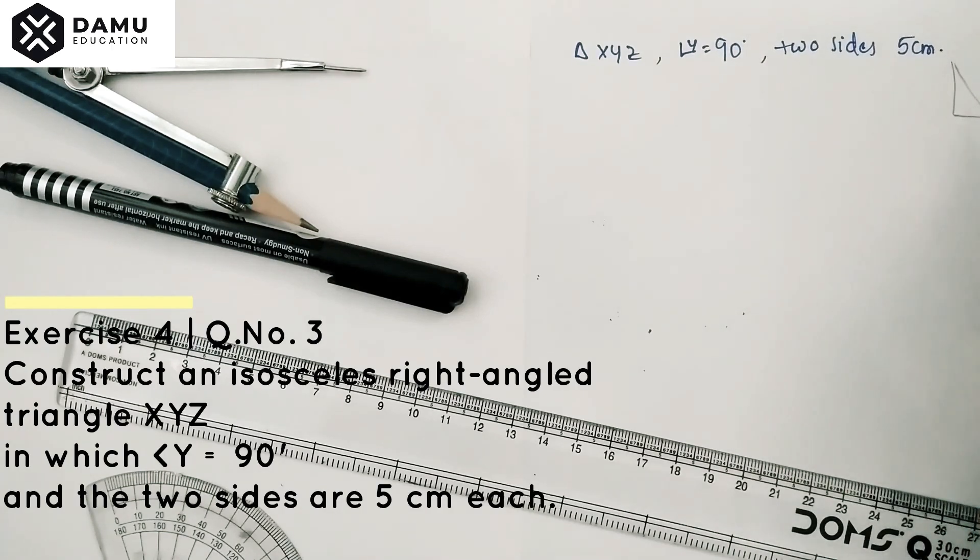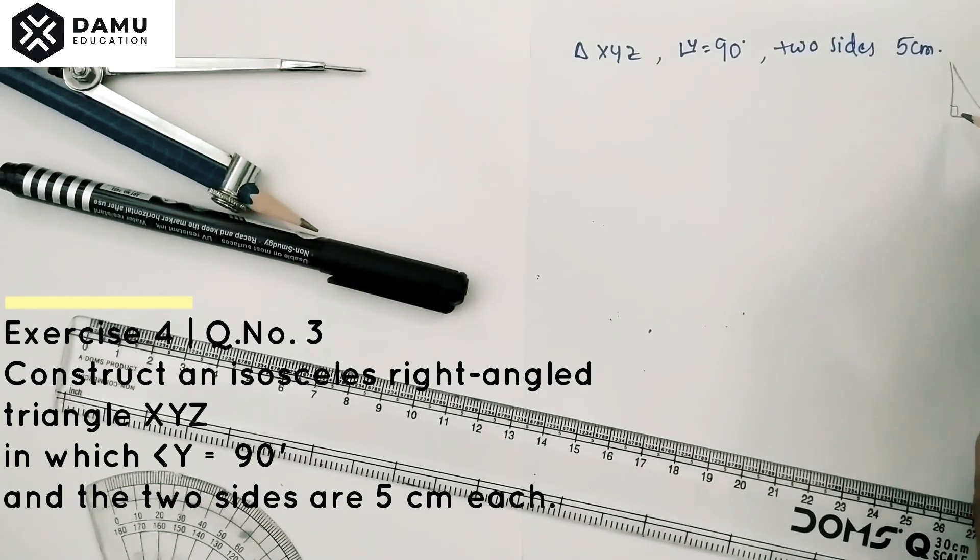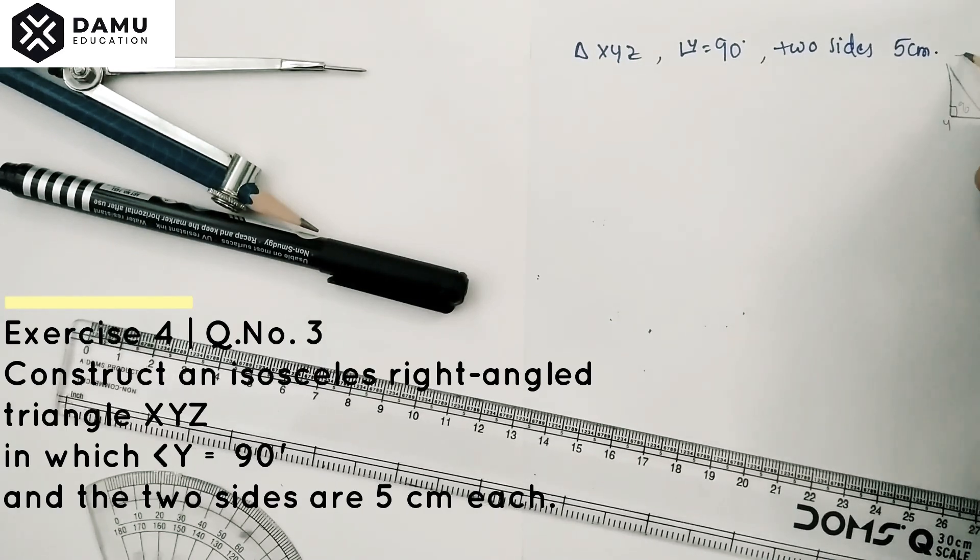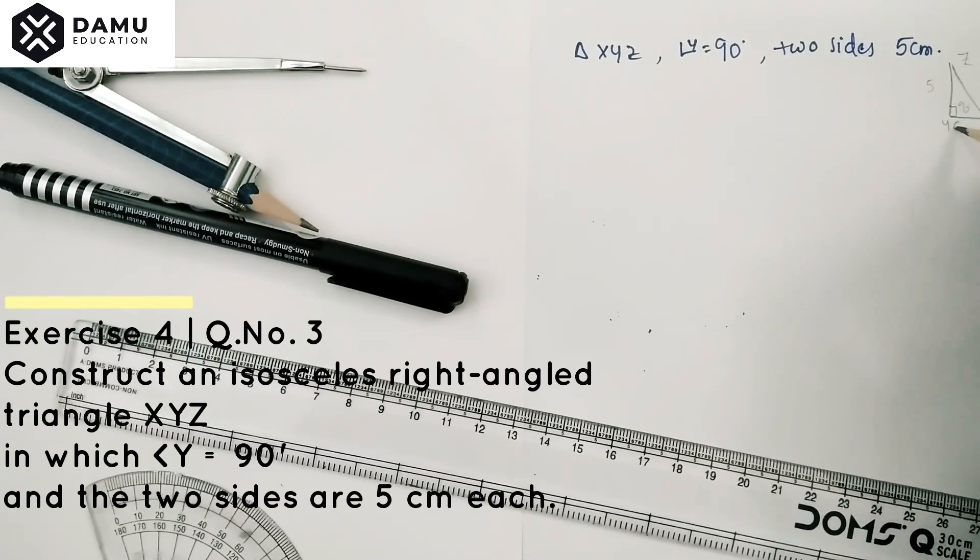So let's draw a rough diagram. Here angle Y will be equal to 90 degrees, then XY and YZ will each be 5 centimeters, the adjacent sides.